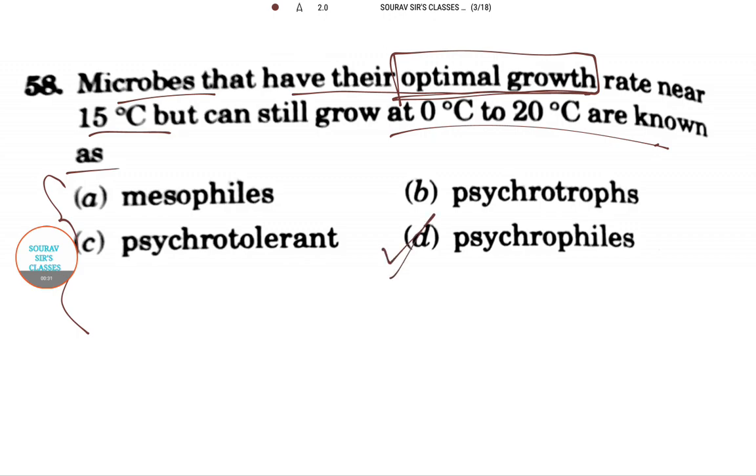The answer is psychrophiles. Psychrophiles are like mesophiles—they can grow at 20°C to 40°C, but they are able to tolerate lower temperatures.